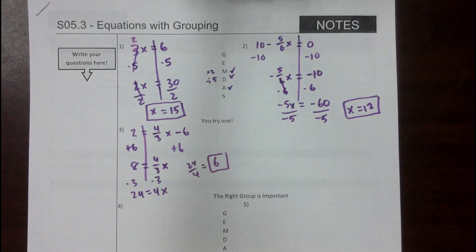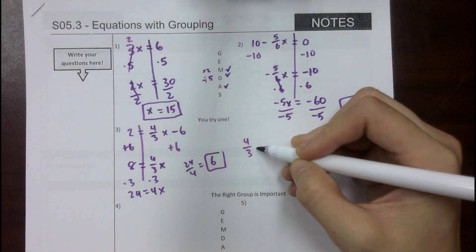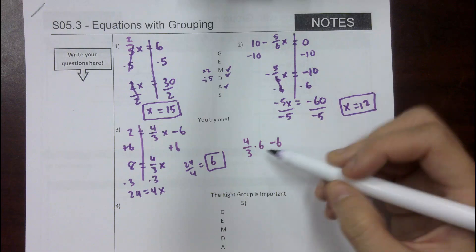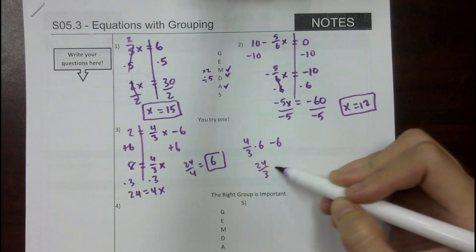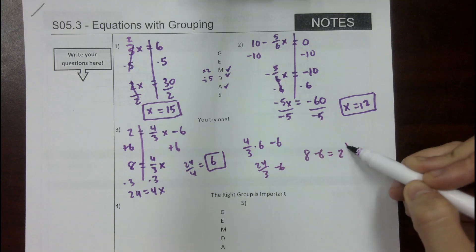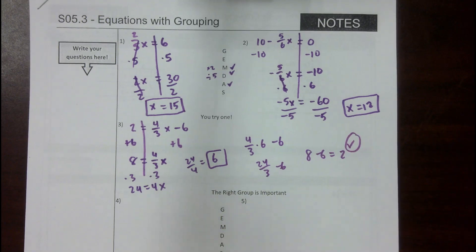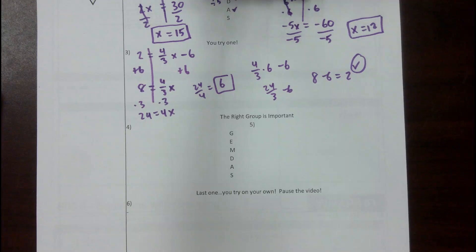Let's check it: (4/3) times 6 minus 6 equals 24/3 minus 6, which is 8 minus 6, equals 2 — that's what we wanted. So number 3 is x equals 6. Now for number 4, we're going to start the trickier ones that are in groups.